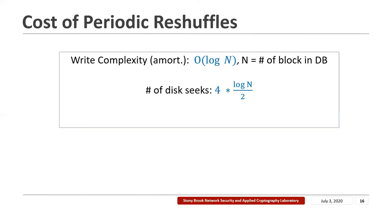An important question is how costly are these periodic reshuffles. To estimate this, we measure the write complexity of the construction — the number of physical writes needed to complete one logical write. In SQORAM, this is O(log n) amortized over all writes, where n is the number of blocks in the database. Since we want to reduce disk seeks, we also estimate the number of disk seeks required on average for reshuffles, which turns out to be 4 times log(n/2). Importantly, the denominator in this expression depends on the size of the write queue and can be amplified to reduce the number of disk seeks in SQORAM.